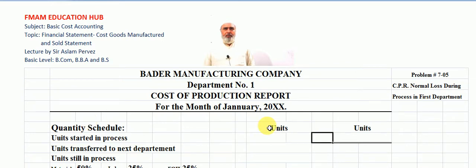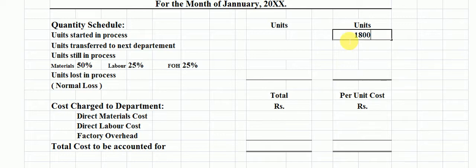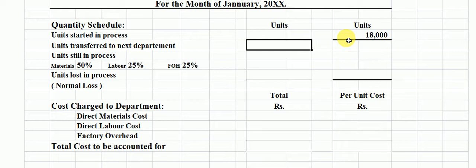This is the main slide for solving this problem. The main heading is Mother Manufacturing Company, Department Number One — Cost of Production Report for the month of January. The first section is the quantity schedule, in which we put the number of units started in process: 18,000 units. There are 14,000 units completed and transferred to the next department.